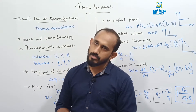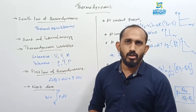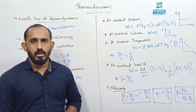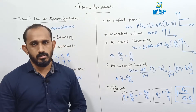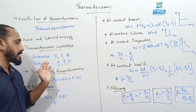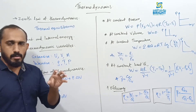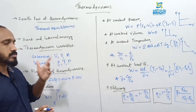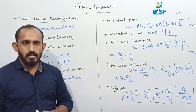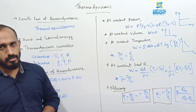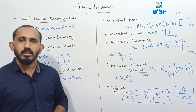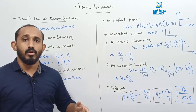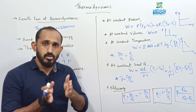Energy depends only on the temperature of the system. The thermodynamic variables used to specify a thermodynamic system include pressure, volume, temperature, mass, and internal energy. There are two types: extensive variables, which change when the system is divided (like mass, volume, internal energy), and intensive variables, which do not change when the system is divided, like density, temperature, and pressure.